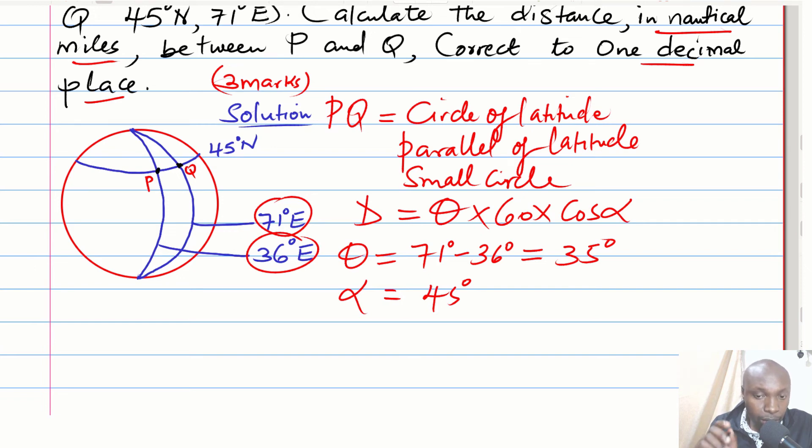Having that, we can get the distance PQ by using the formula. That is the longitude difference, which is 35, multiplied by 60, multiplied by the cosine of the latitude angle, which is 45 degrees.